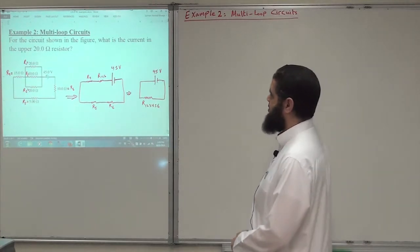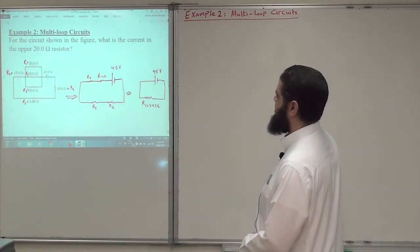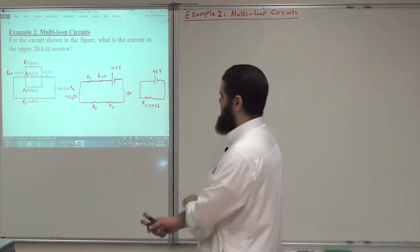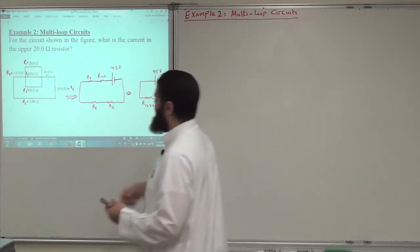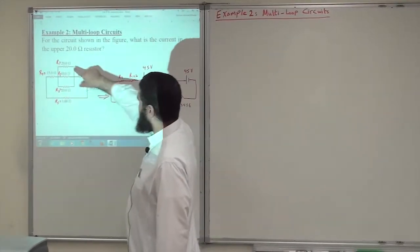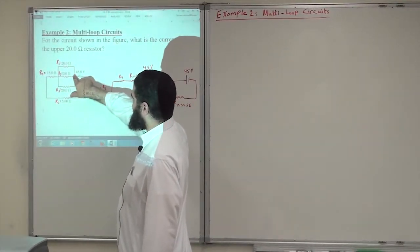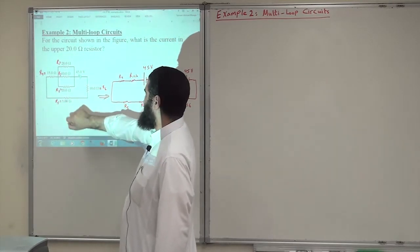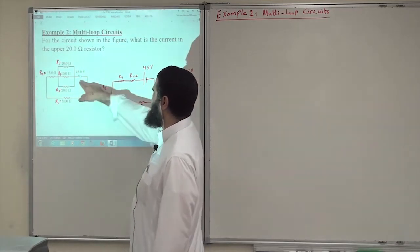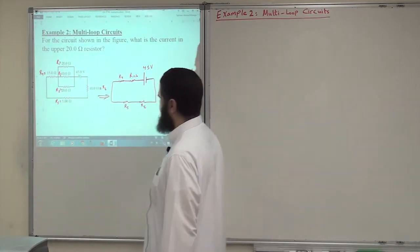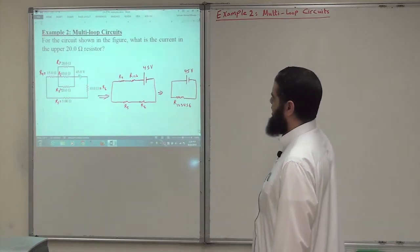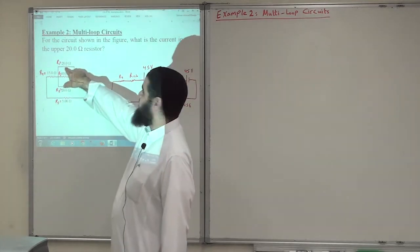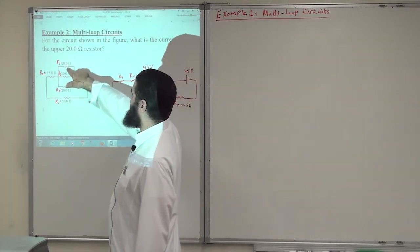This is the second example on multi-loop circuits. For the circuit shown in the figure, what is the current in the upper 20 ohm resistor? Let us give labeling for the resistors: R1 is 20 ohms, R2 is 10 ohms, R3 is 20 ohms, R4 is 15 ohms, R5 is 5 ohms, R6 is 10 ohms, and the battery has an EMF of 45 volts. He is asking how much current is passing through R1, the upper 20 ohm resistance.